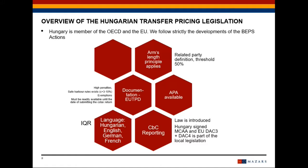Cost recharges don't need to be documented. Transactions with value less than 160,000 euros shouldn't be documented. Transactions covered with an APA shouldn't be documented separately. This means in practice that if there is an APA available for a certain transaction, then that transaction shouldn't be documented. However, if there are other types of transactions within the group, then they must be subject to documentation purposes.